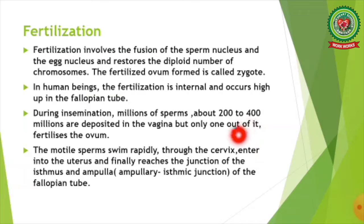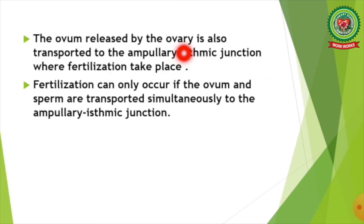During insemination, millions of sperms — about 200 to 400 million — are deposited in the vagina, but only one out of them fertilizes the ovum. The motile sperm swim rapidly through the cervix, enter into the uterus, and finally reach the junction of the isthmus and ampulla, also known as the ampullary isthmic junction of the fallopian tube.